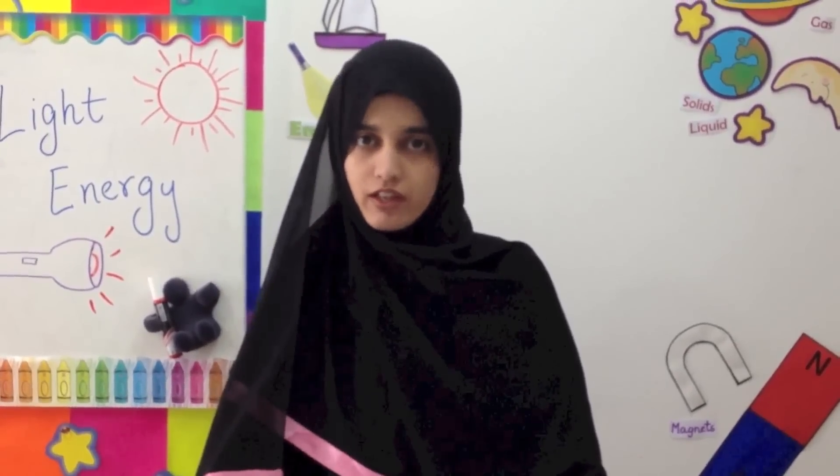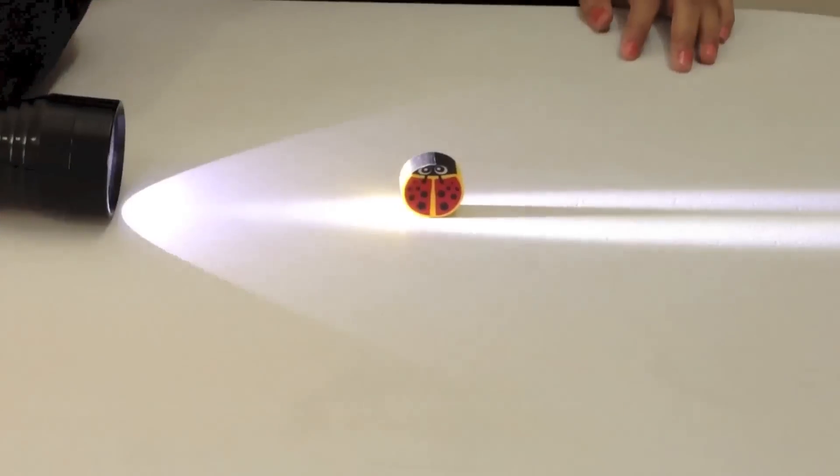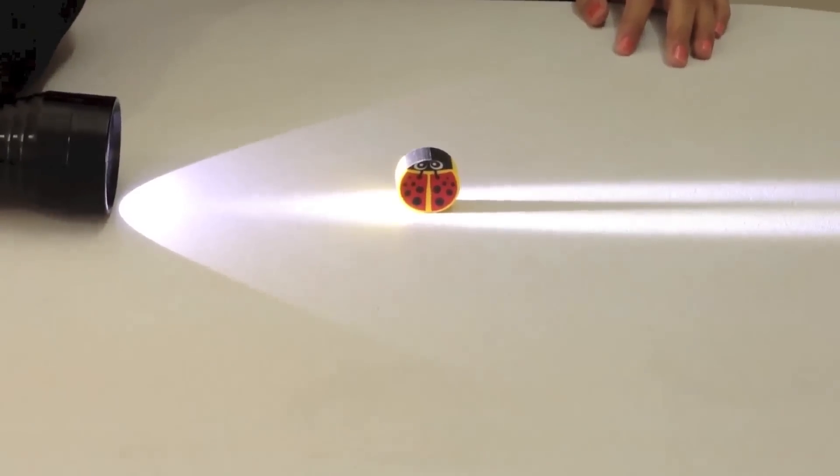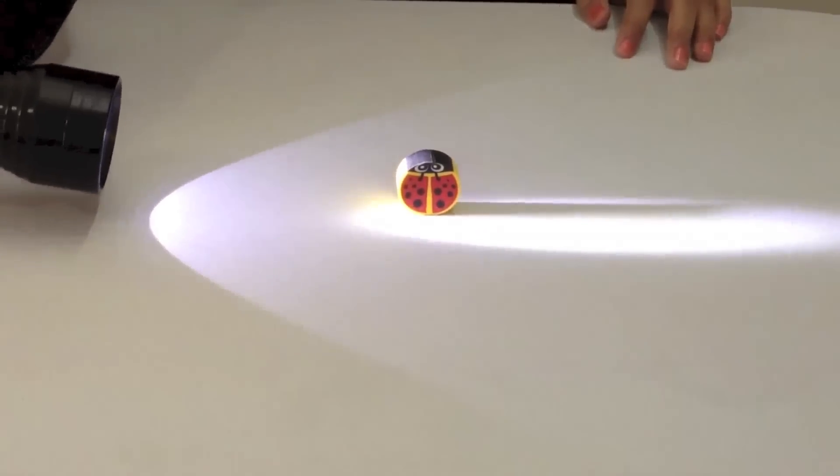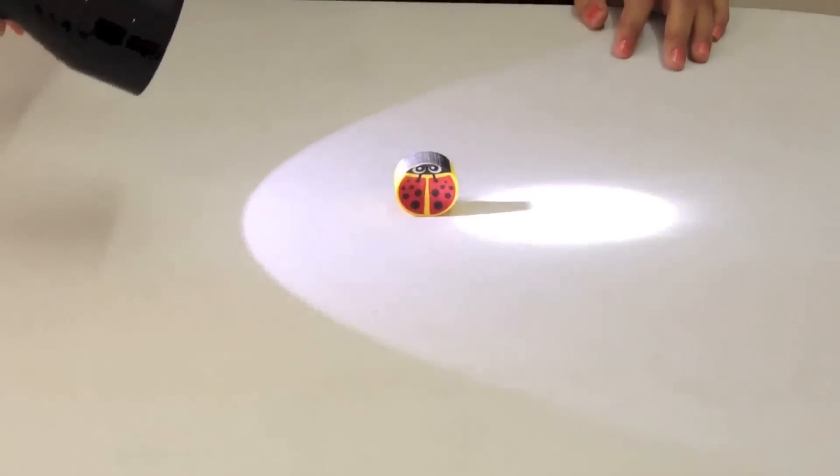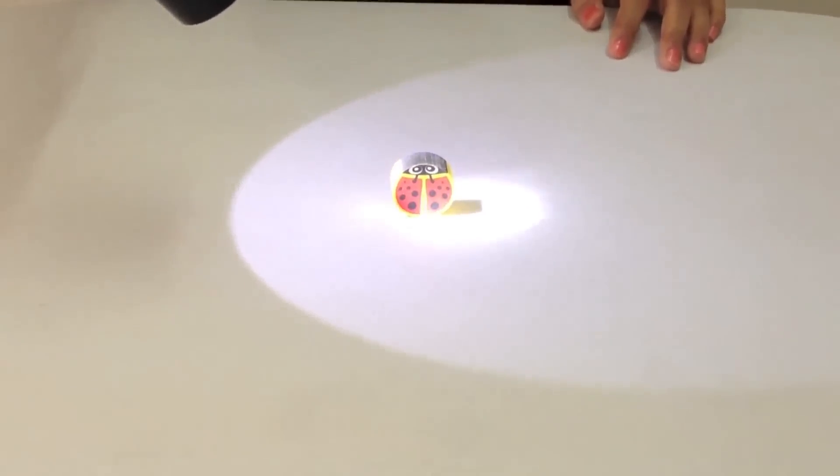Now, I'm going to do an experiment to show how the shadow moves during the day, in the morning time, afternoon, and then in the evening time. In the morning, the shadows are the longest. As the sun goes up, you can see that at noon time, the shadow is the shortest.